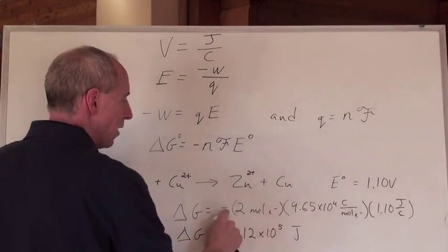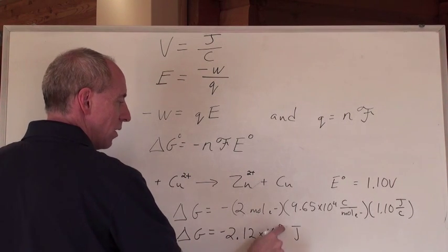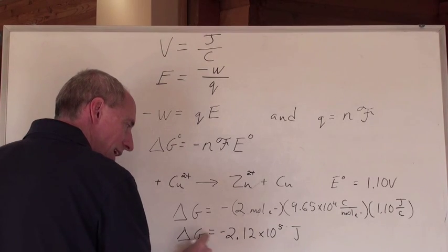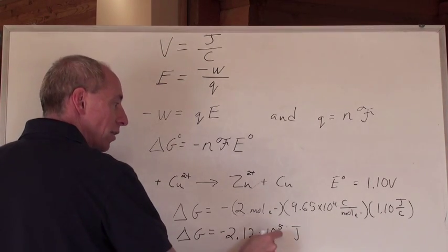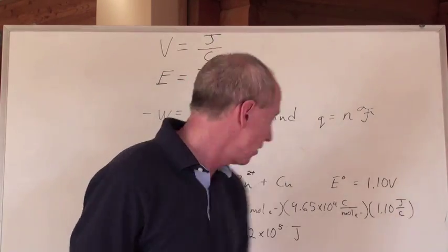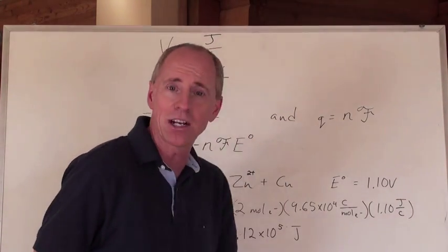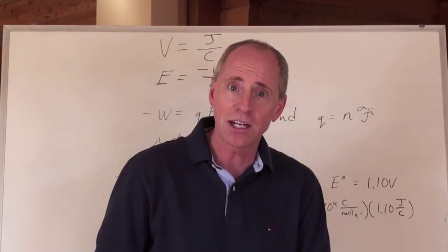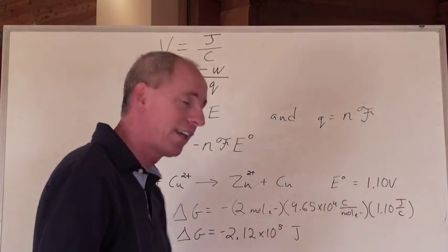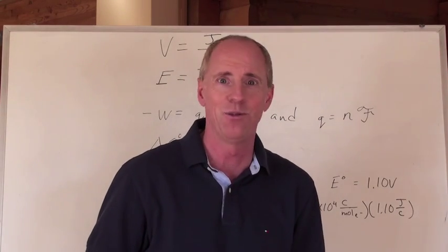Anyway, when you do this math right here, you get negative 2.12 times 10 to the 5 joules. And that means that's a spontaneous reaction and it releases a lot of workable energy. Yeah, no kidding. Because remember, we can take these half reactions, add them together, spontaneous reactions, and we can make batteries out of them. And that provides a lot of useful energy. And we can calculate how much. Ha! Wow.